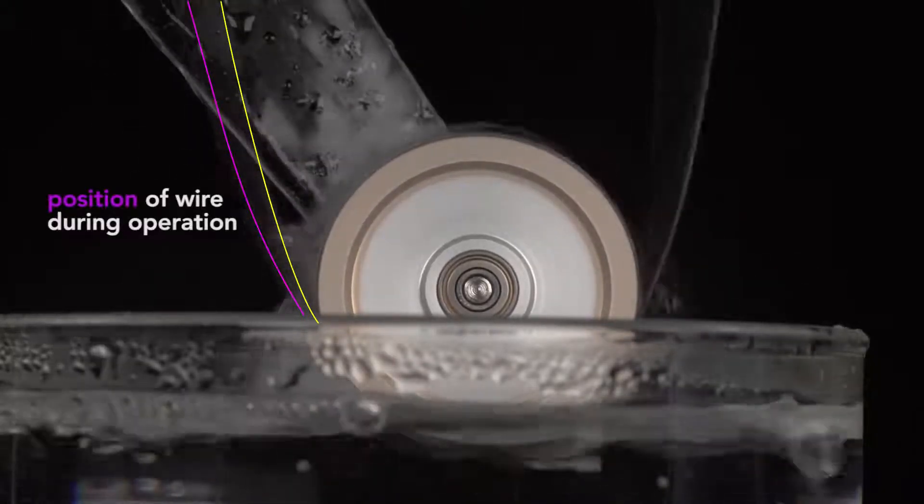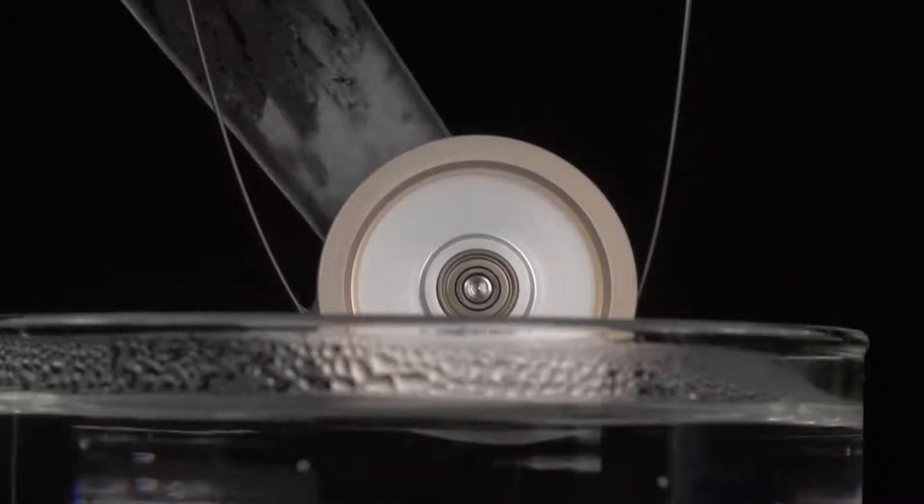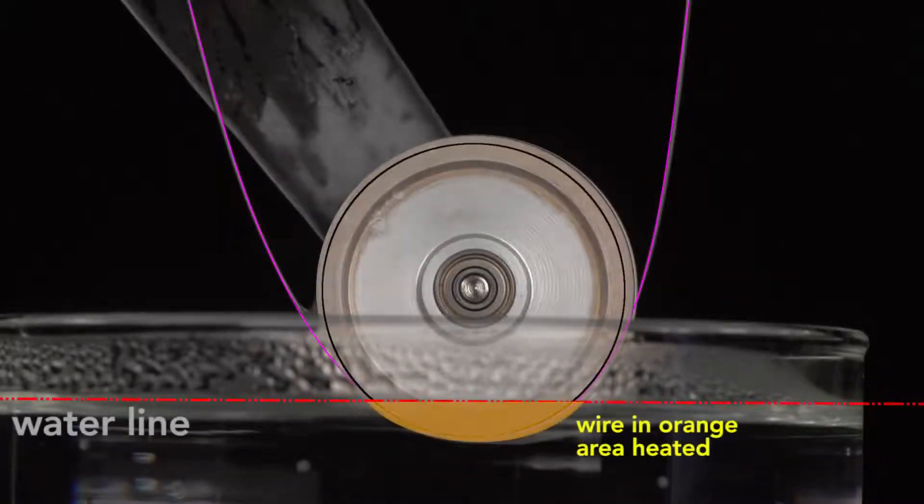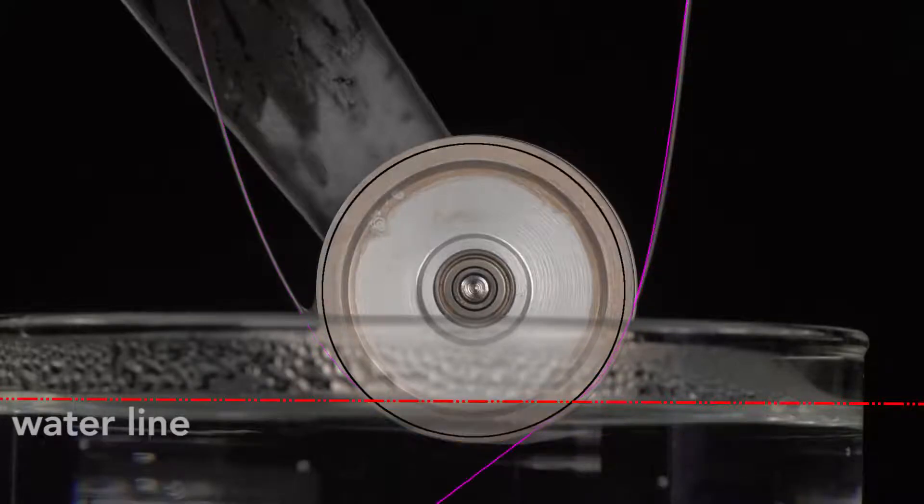This happens because when the bottom wheel comes into contact with the hot water, the section of the wire highlighted here in orange is heated. If it were not in a loop, then the wire would be straight like this. But because it's in a loop, as it tries to straighten, it exerts a force on the wheel, which causes it to turn.